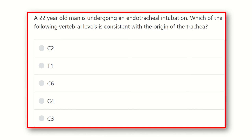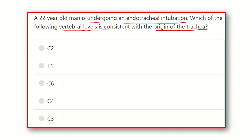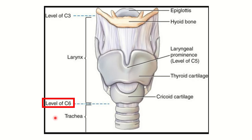Read the question very carefully. A 22-year-old man is undergoing an endotracheal intubation. Which of the following vertebral levels is consistent with the origin of the trachea? The key point here is the vertebral level at which the origin of the trachea occurs. The options are: C2, T1, C6, C4, and C3.